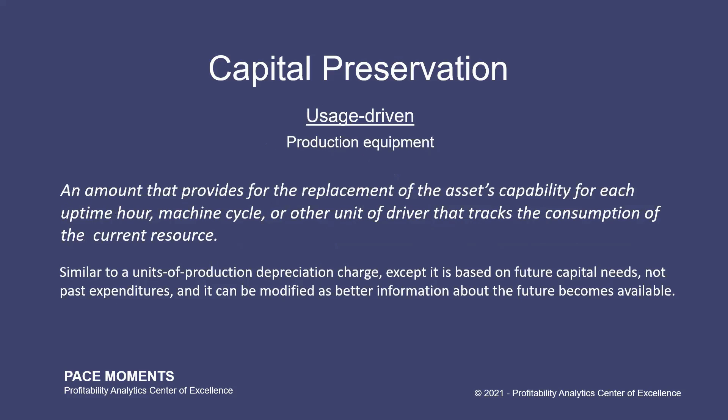Usage-driven capital preservation usually applies to production equipment. It's an amount that provides for the replacement of the asset's capability for each uptime hour, machine cycle, or other unit of driver that tracks the consumption of the current resource. It's similar to a units-of-production depreciation charge — an acceptable, yet rarely used method — except it's based on future capital needs, not past expenditures, and it can also be modified as better information about the future becomes available.